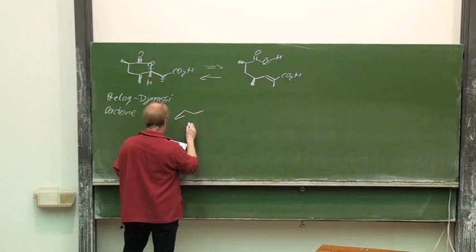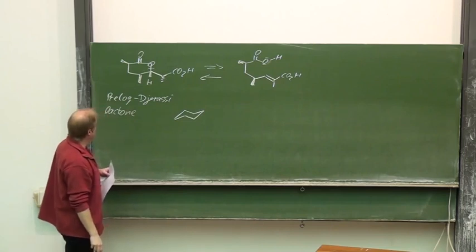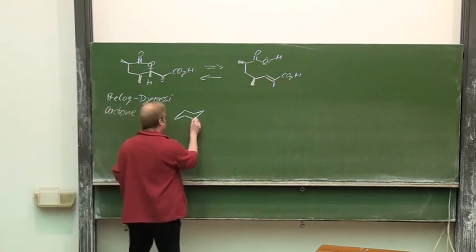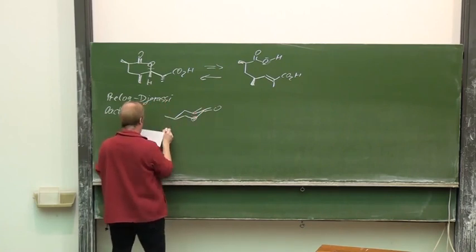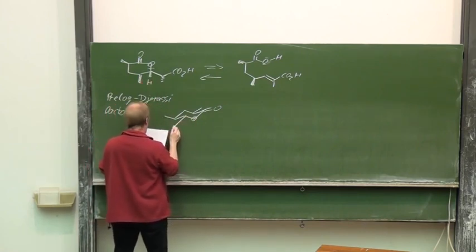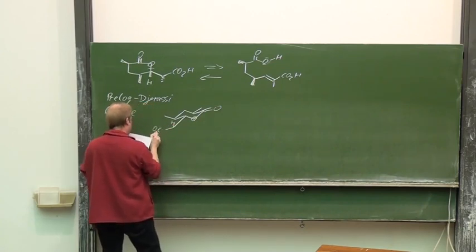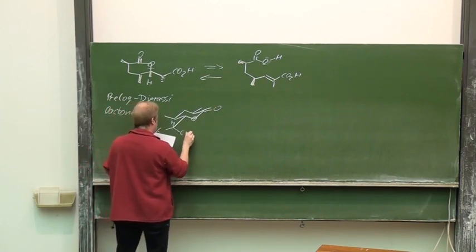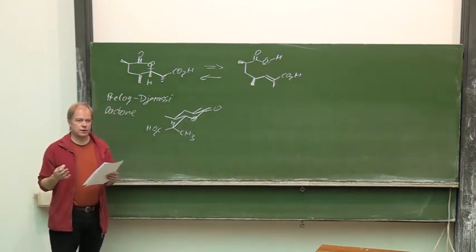Therefore, we should write it down as a six-membered ring in the chair conformation. And then we will notice that for this structure, all substituents, the two methyl substituents and the bigger one here, are in equatorial position. And this is, of course, thermodynamically preferred.